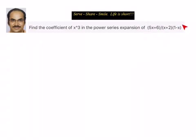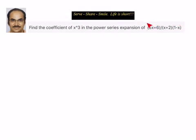Now we know how to deal with partial fractions, so we can go ahead with that. After that we have to convert them into power series expansions, then we have to see what is the coefficient of x cube. So the first part will be partial fractions, then once we simplify that we will convert them into power series, and then expand to find the coefficient of x cube.